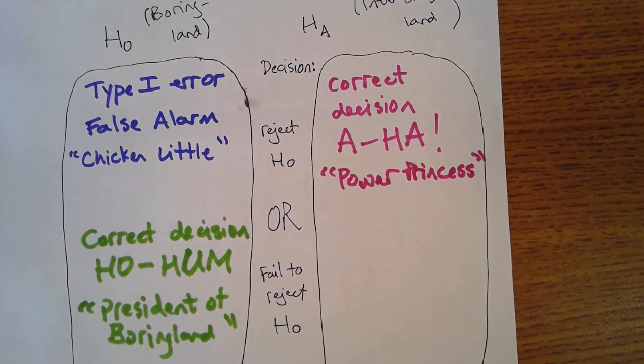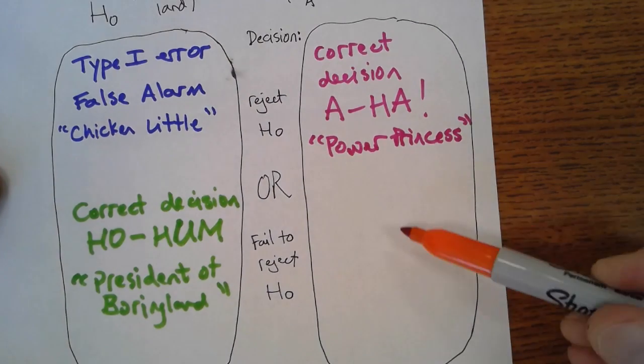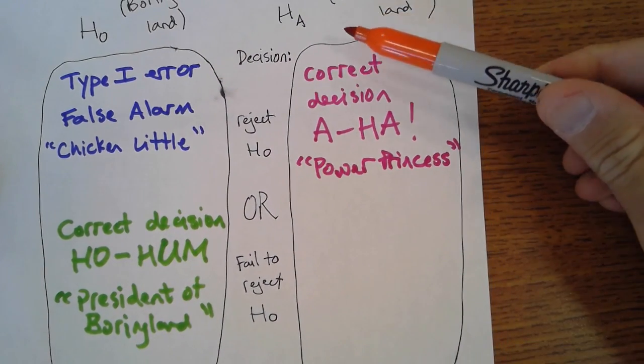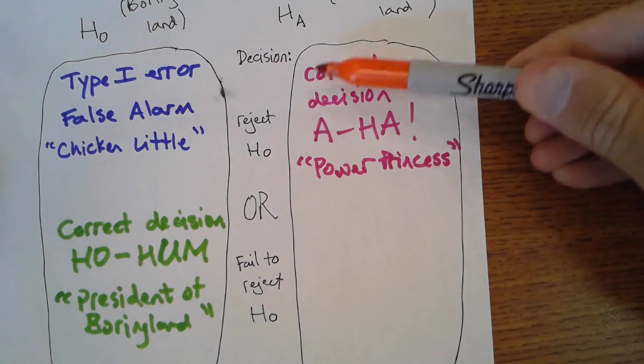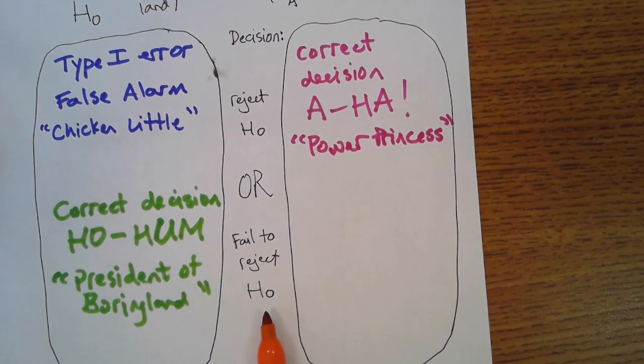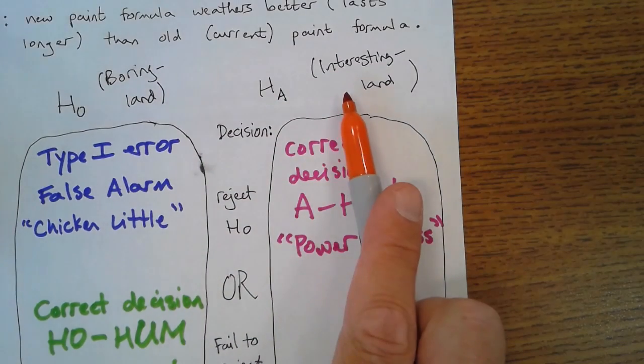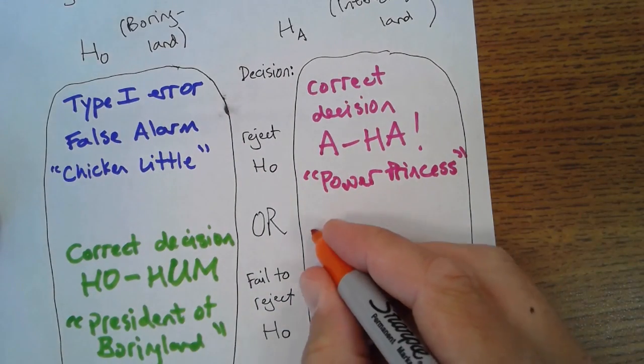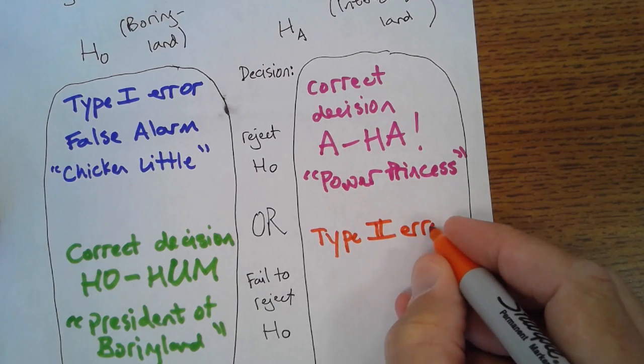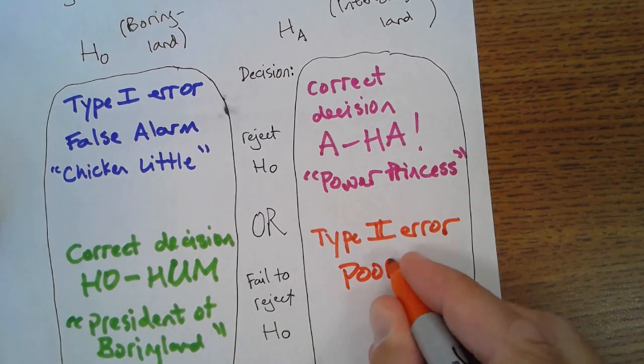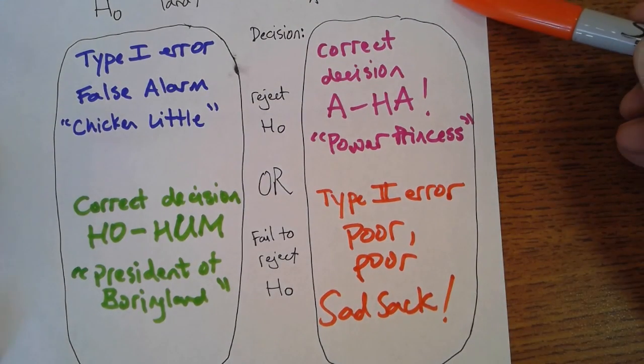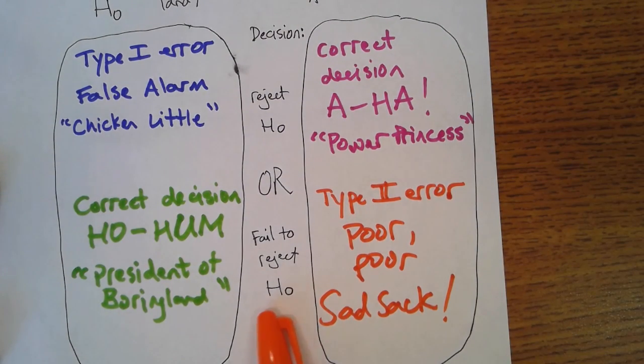But the name of the video is Sad Sack. Poor Sad Sack, the type 2 error. He lives down here. He lives in interesting land. Type 2 errors occur when you live in a world where there's something interesting to be discovered, but you failed to discover it. Think of rejecting the null hypothesis as discovering something, and if you fail to do that, even though it was there to be discovered, then you've made a type 2 error, and it is pretty much the most pitiful thing of all. Poor, poor Sad Sack. He lives in this interesting land where there's things to be discovered, but he fails to discover those things.